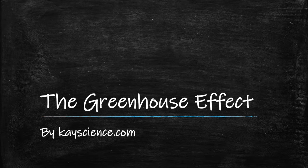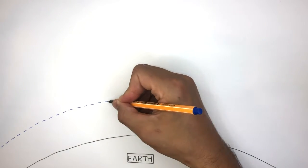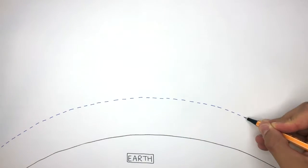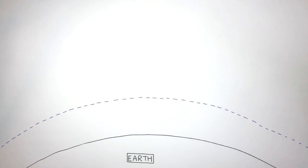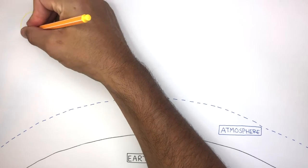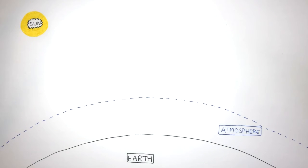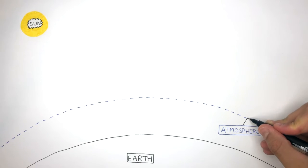The Greenhouse Effect by kscience.com. Here I'm drawing a small section of the Earth, and this dashed line represents the upper limit of the Earth's atmosphere. This diagram represents the Sun. The atmosphere is this thin layer around the Earth which contains gases.